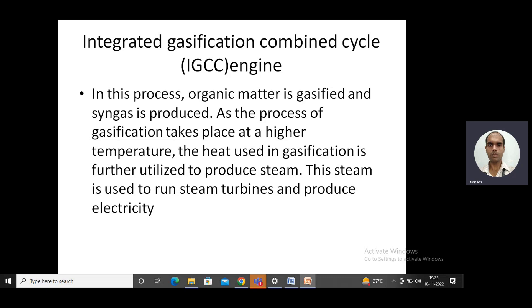In integrated gasification combined cycle, gasification occurs and syngas is produced. This syngas is used as a fuel on one side for producing energy. On another side, there is heat because gasification takes place at a very high temperature. It could be 600 degrees Celsius.